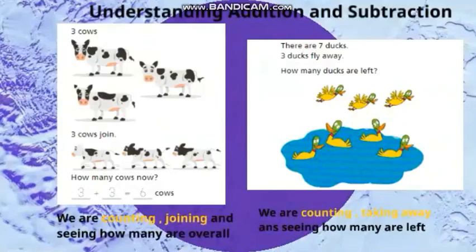So if I look at the picture of the cows to the left, I have three cows and then three other cows joined them. So how many cows do I have? I need to count them first, then I need to join them together, combine them together. So if I count the cows that are looking at me, how many cows do I have? One, two, three.